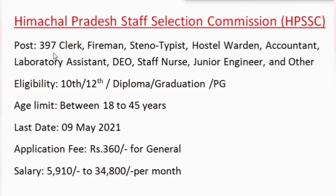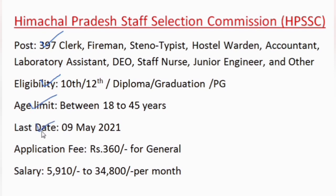397 Clerk, Fireman, Steno, Typist, Hostel Warden, Accountant, DEO, Staff Nurse, and Junior Engineer Post Vacancy in Himachal Pradesh Staff Selection Commission. Eligibility: 10th, 12th, Diploma, Graduation, or PG. Age limit: 18 to 45 years. Last date for application: 9 May 2021. Application fees: Rs. 360 for General category.